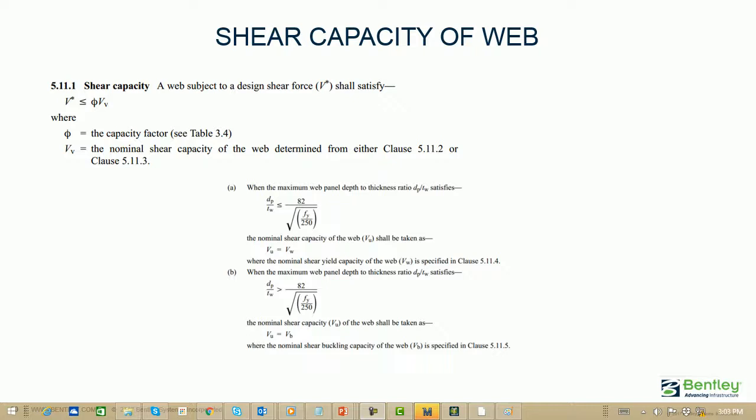In a similar way, if the DP by TW ratio exceeds this ratio, then VU has to be taken as the shear buckling capacity of the web, that is VB, as specified in clause 5.11.5. So depending on these two guiding rules, the shear capacity has to be categorized whether it falls on the yielding condition or the shear buckling condition.